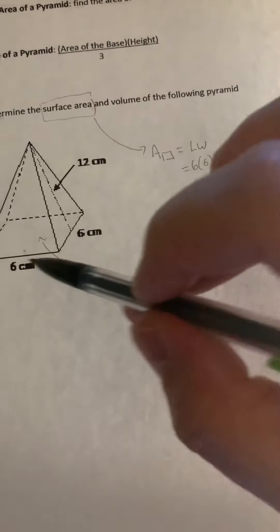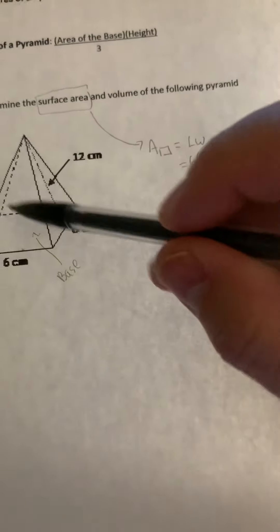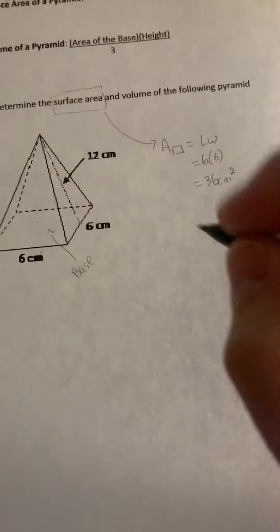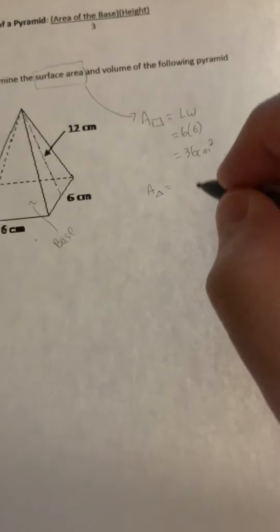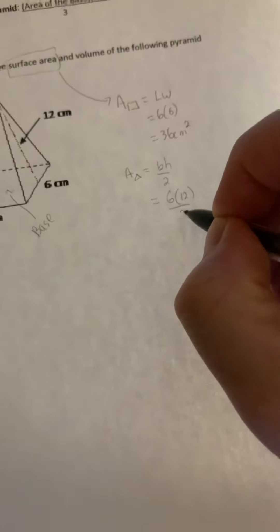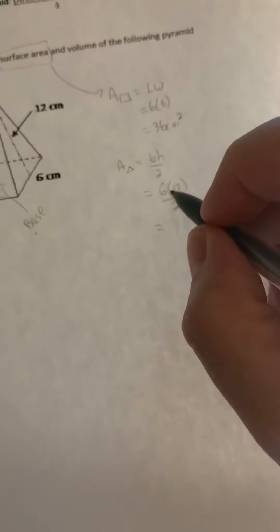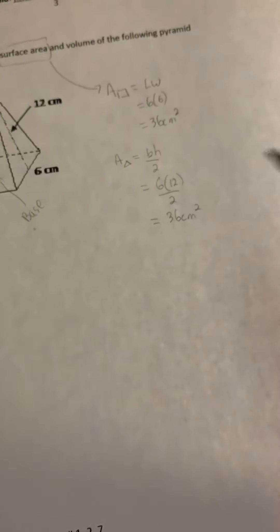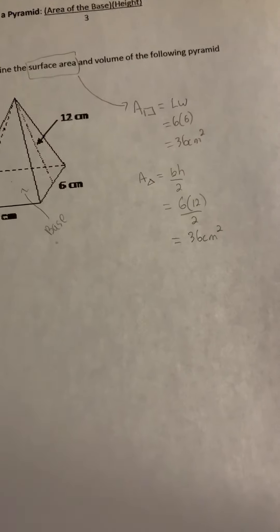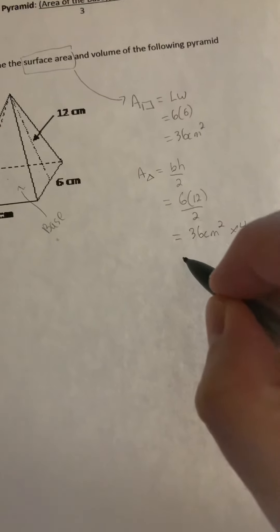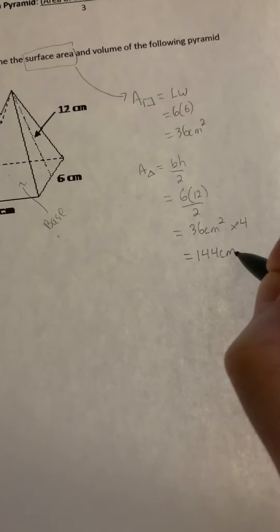Okay so since it's a square, that means every triangle is the same because they all have the same length in the base. So the area of a triangle is base times height divided by 2. So that's 6 times 12 divided by 2. 6 times 12 divided by 2 is 36 centimeters squared. And then since we have four triangles, we're going to multiply this by 4. So you get 144 centimeters squared.